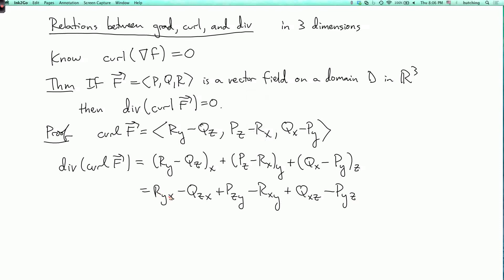Here I have r_yx and there I have minus r_xy, so by Clairaut's theorem I can cancel those. Here I have minus q_zx and here I have plus q_xz, so by Clairaut's theorem I can cancel those. Here I have plus p_zy and minus p_yz, so by Clairaut's theorem I can cancel those too. Now there's nothing left. So I have zero and we're done.